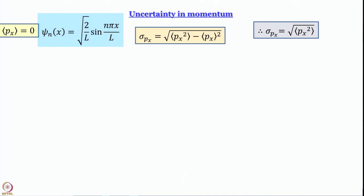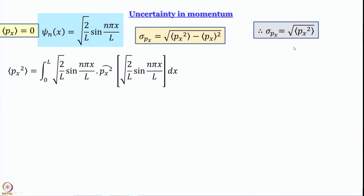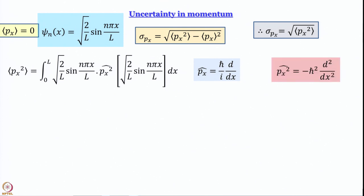All we need to do is find the average value of p_x². We know how to find the expectation value: we write the wave function — in this case a real wave function, so ψ* = ψ — multiplied by p_x² operating on √(2/L)·sin(nπx/L). Integrate between 0 and L and take the square root. The operator for p_x is (ℏ/i)·d/dx, so p_x² means making the same operator act twice.